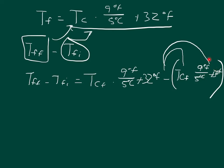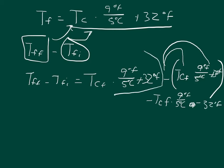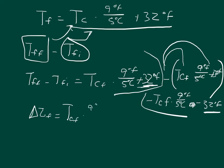Because there's an addition sign, we have to distribute the negative over here as well. What we get for that part of the expression is minus the temperature in Celsius initial times 9°F over 5°C, and then we get minus 32°F. So all of this minus all of this — the 32s end up canceling each other out. The plus 32 and the minus 32 cancel out.